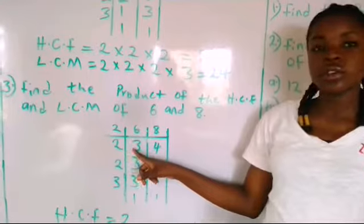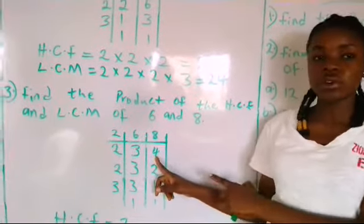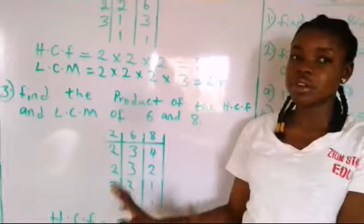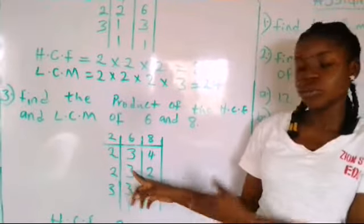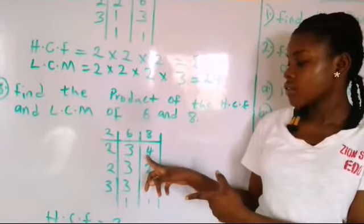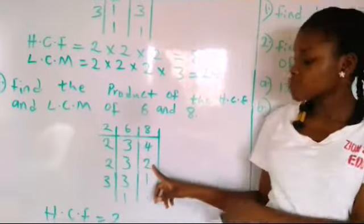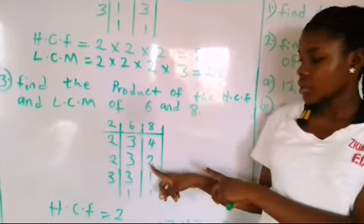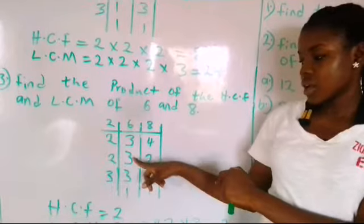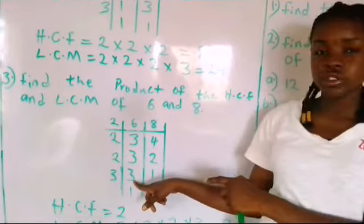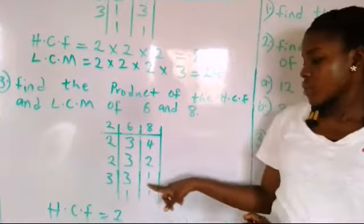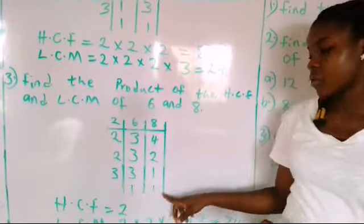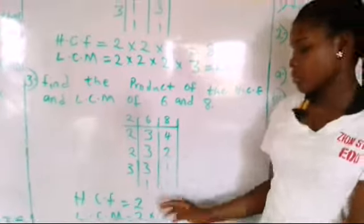Now 2 cannot go into 3, but we still use 2 because of the 4 — you cannot use a big number, you must finish the small number first. So 2 cannot go into 3, so we bring down the 3, and 4 divided by 2 gives 2. We use 2 again because of this 2: 2 divided by 2 gives 1. 2 cannot go into 3, so we bring down the 3. Now we have 3 and 1, so we use 3: 3 divided by 3 gives 1, and we bring down the 1. That is how to use this table.